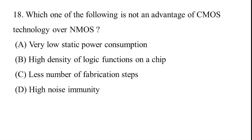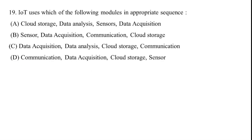Question 18: Which of the following is NOT an advantage of CMOS technology over NMOS technology? Options: A) Very low static power consumption, B) High density of logic functions on chip, C) Less number of fabrication steps, D) High noise immunity. The correct answer is option C — less number of fabrication steps is not an advantage of CMOS over NMOS.